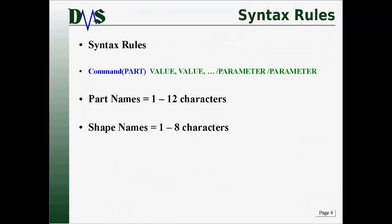The first thing we need to talk about for model organization are the syntax rules. For model creation, there are a few rules you have to know. Number one is part names — this is one of the throwbacks from the DOS origins of GHS. Part names can only be 1 to 12 characters long, so you'll always see very short part names. Similarly, shape names can only be 8 characters long. Just remember that all of these have to be very short names.